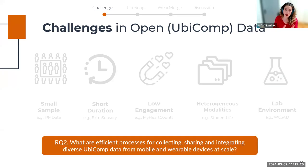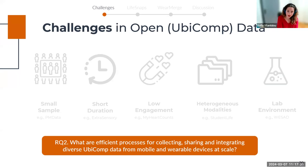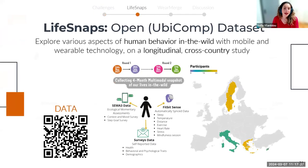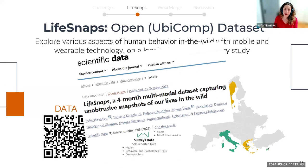Our second question is: what are efficient processes for collecting, sharing, and integrating ubicomp data from mobile and wearable devices at scale to facilitate alignment with human needs, values, and expectations? Given the significant lack of open ubicomp data, we designed and conducted our own data collection study. The results were published in Nature's Scientific Data journal — an accomplishment I'm extremely proud of. The study resulted in a new ubicomp dataset called LiveSnaps, which explores various aspects of human behavior in the wild.